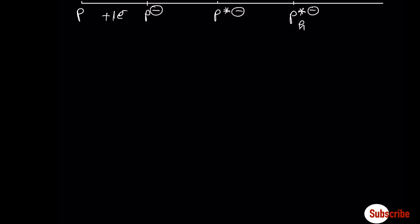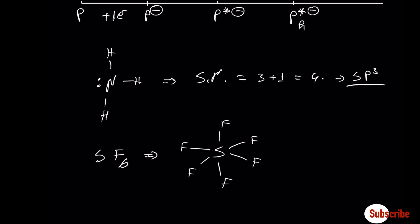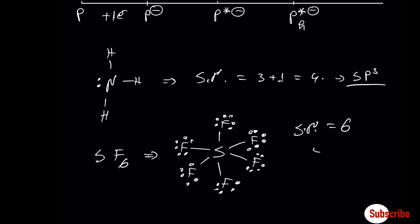An easier way to find the hybridization without doing the diagrams is by using the steric number. For example, ammonia: the steric number is equal to the number of sigma bonds plus the number of lone pairs — in this case 3 plus 1 equals 4, which means its hybridization uses 1s and 3p orbitals. Another example is SF6: its steric number is 6, which means it has 1s, 3p, and 2d orbitals included, a total of 6 orbitals. This is a short way to find hybridization, but the complete way is by drawing the diagrams, which explain how the bonds are formed.